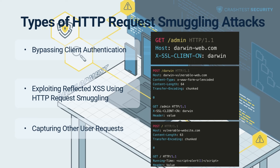Mitigating HTTP request smuggling vulnerabilities — some measures include: use a web application firewall to block malicious URLs and IP addresses; normalize abnormal requests and close the TCP connection for persistent ambiguous requests; disable any performance optimizations that use the Content-Length and Transfer-Encoding headers in the backend server; and avoid using a content distribution network or reverse proxy server whenever possible. With an HTTP smuggling vulnerability, the impacts of a successful attack are critical — attackers can gain access to user accounts and sensitive information.